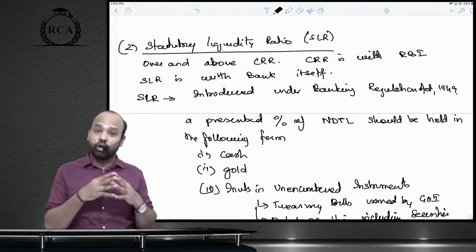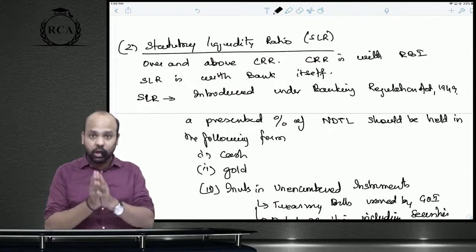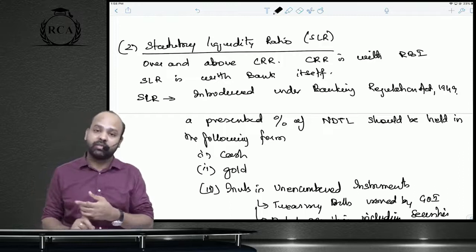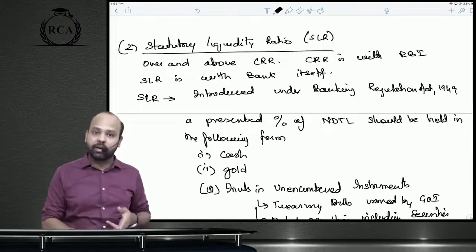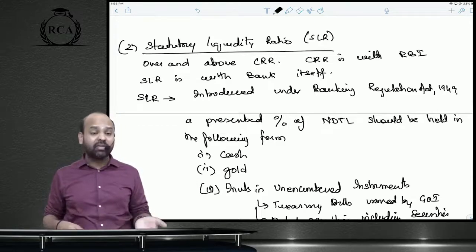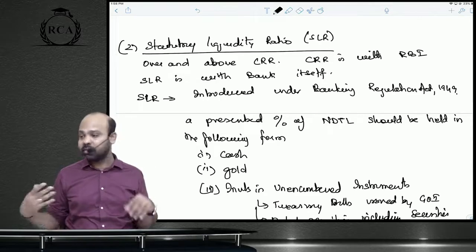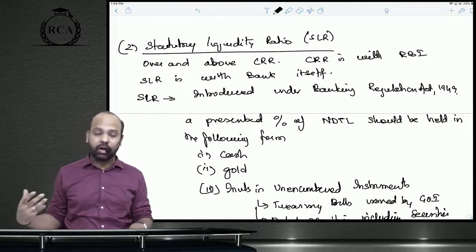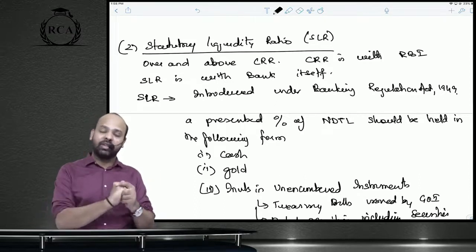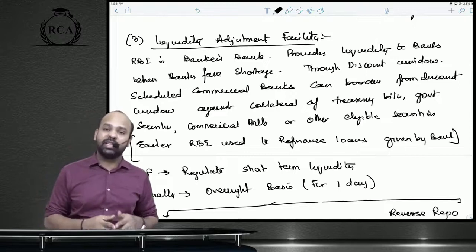The statutory liquidity ratio (SLR) is also a percentage of net demand and time liabilities, prescribed under the Banking Regulation Act. Banks must hold SLR in the form of cash, gold, or unencumbered specified securities such as treasury bills, government securities, state development loans, or other specified securities. When SLR is increased, banks hold more of these securities, reducing money supply — a contractionary policy that limits credit generation.